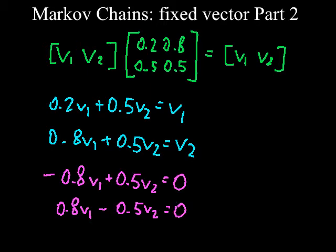Notice now that we have two of the same equation. Whenever you follow this process to solve for the fixed vector, you will always have a repeated equation. You will need to discard one of them, but then you will have less equations than variables. So in order to solve the system of equations, you will need another equation.